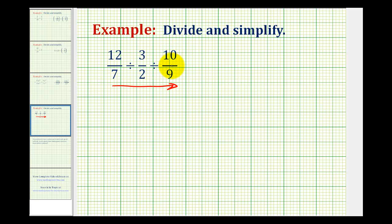So we can write this division problem as 12-sevenths times two-thirds times nine-tenths.